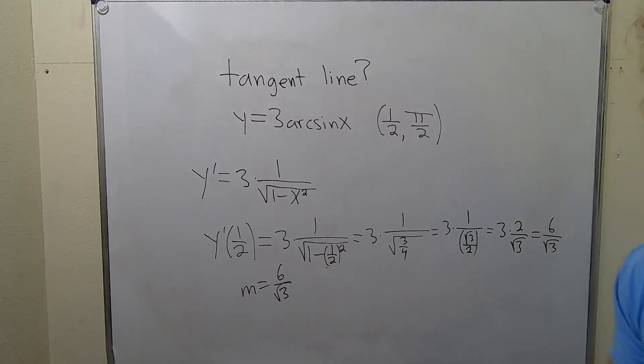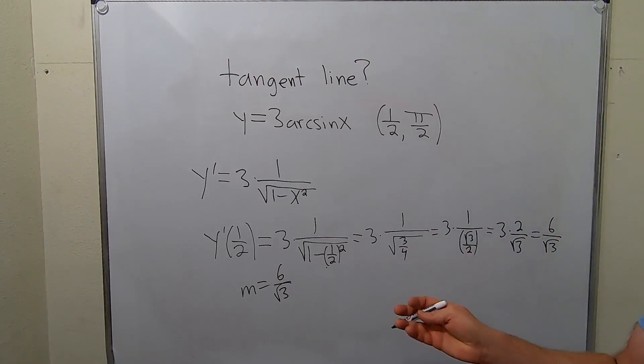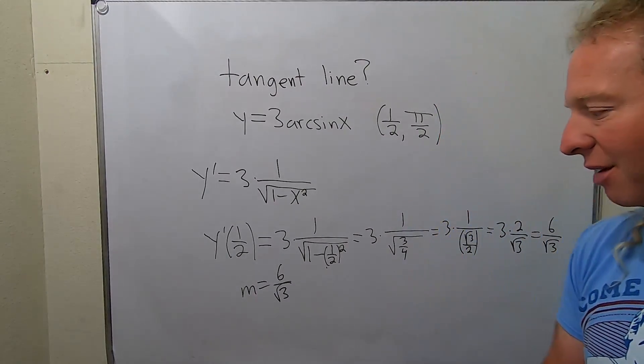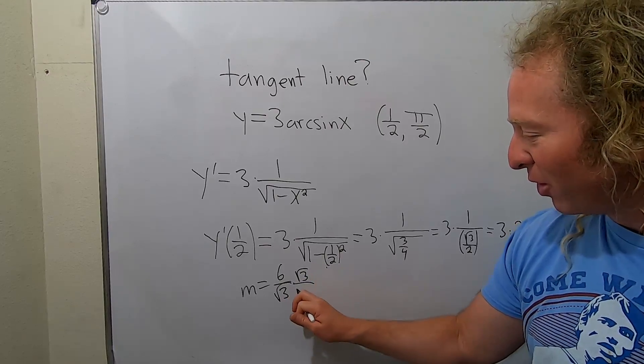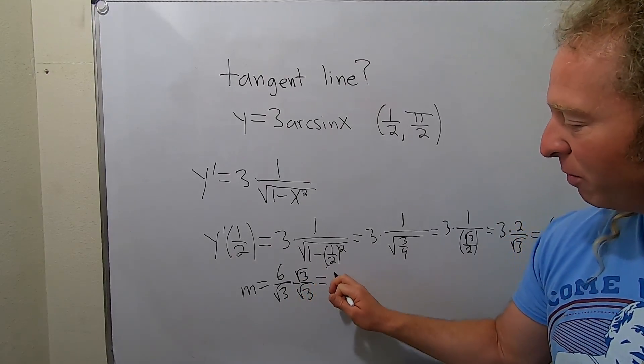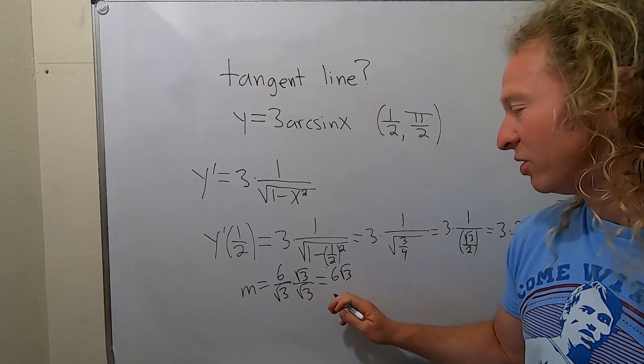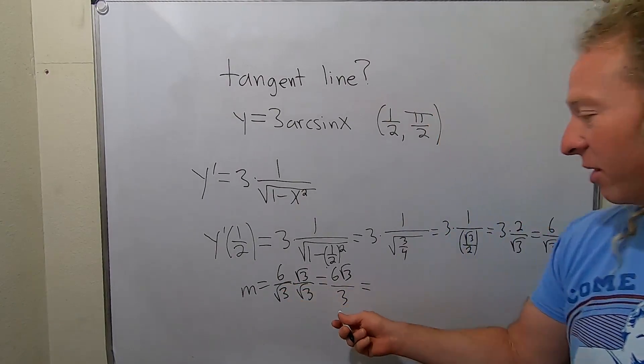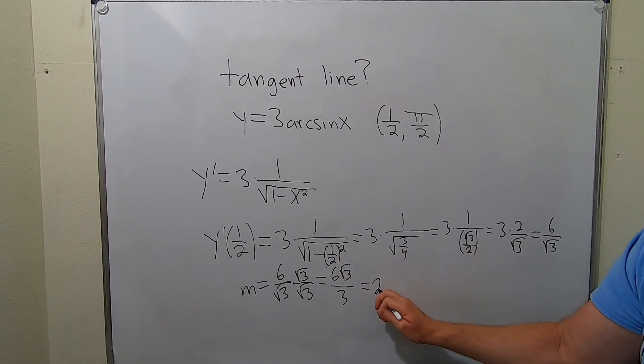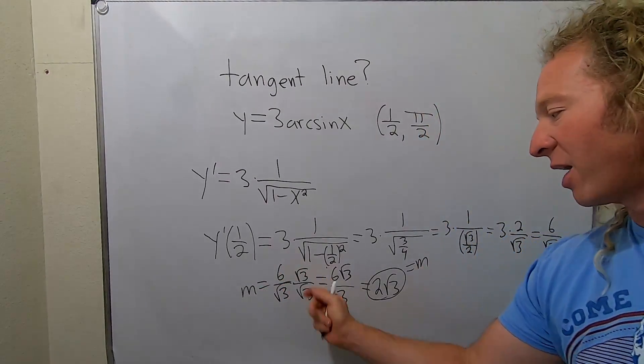I'd be wondering, do you have to rationalize something like this? It doesn't really matter, right? It's totally up to you. If it's bothering you, you can rationalize it. I'm going to do it. Why not? So square root of 3 over square root of 3. This will be 6 square root of 3. Square root of 3 times square root of 3 is 3. Look at that, it cleans up. Wow, that was pretty cool. Because now what happens here is you just get 2 square root of 3. So that's a much nicer slope, right? This is our slope, a little bit nicer than the fraction.